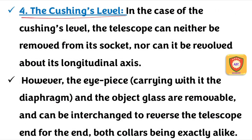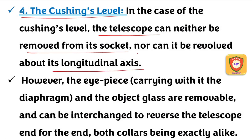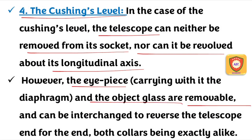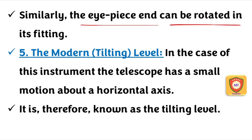Cushing's Level: we can remove the telescope from the socket. In the Cushing's Level, we can present the eyepiece and object glass, remove these two objects, and interchange them.